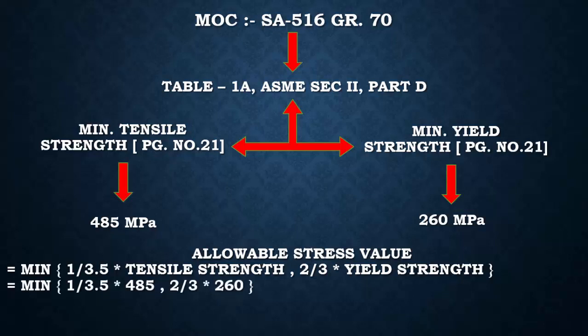With tensile strength of 485 MPa and yield strength of 260 MPa, we get the minimum of 138 and 173 MPa (values rounded to avoid confusion). So the allowable stress value for SA516 Grade 70 at room temperature is 138 MPa. But the question still persists — what is the basis for using 1/3.5 times tensile strength and two-thirds of yield strength?